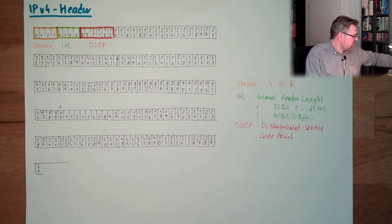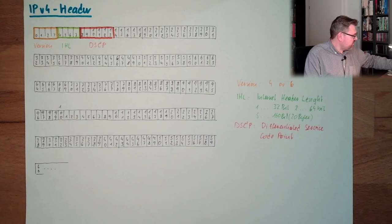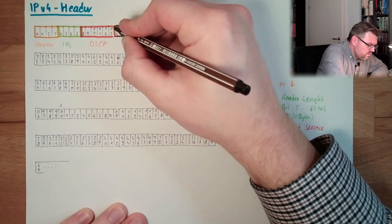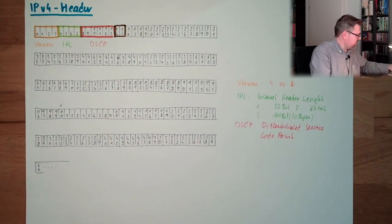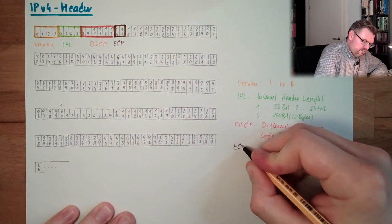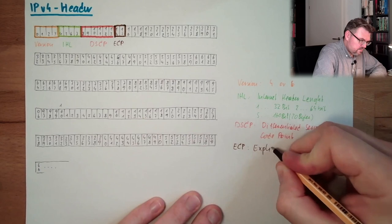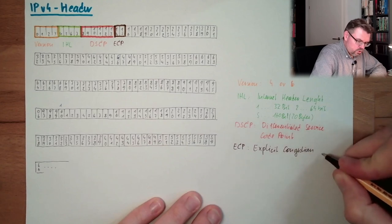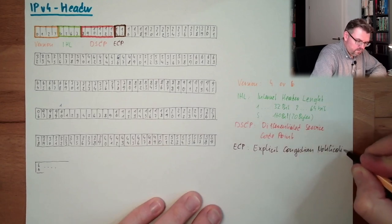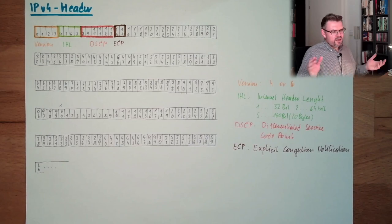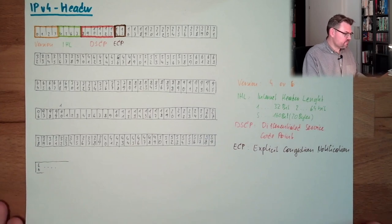The next two are ECN. ECP means Explicit Congestion Notification. Here a hop, a router, can set the ECP bit and say, okay, hey, we have almost a congestion warning. Warning, congestion warning.